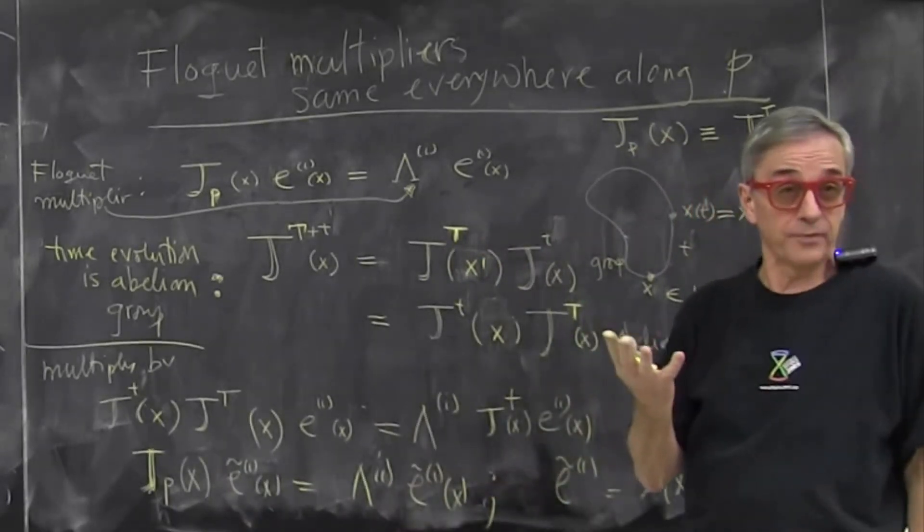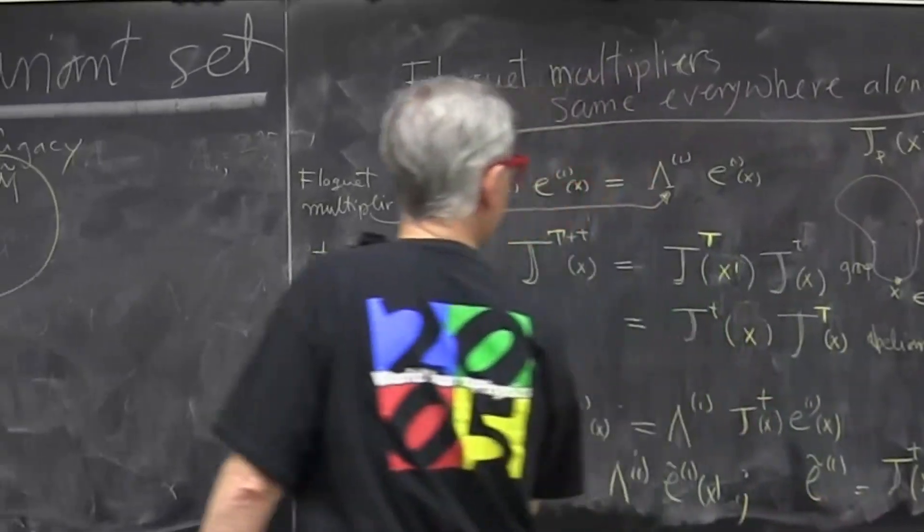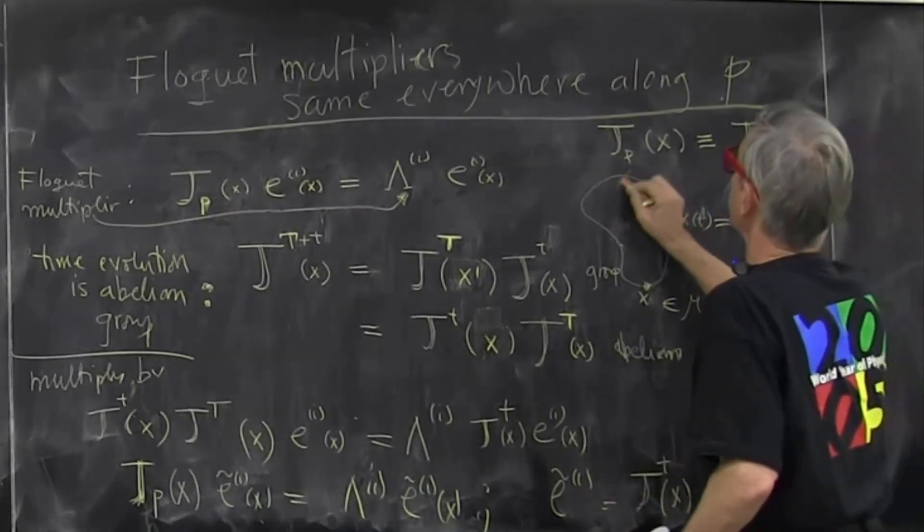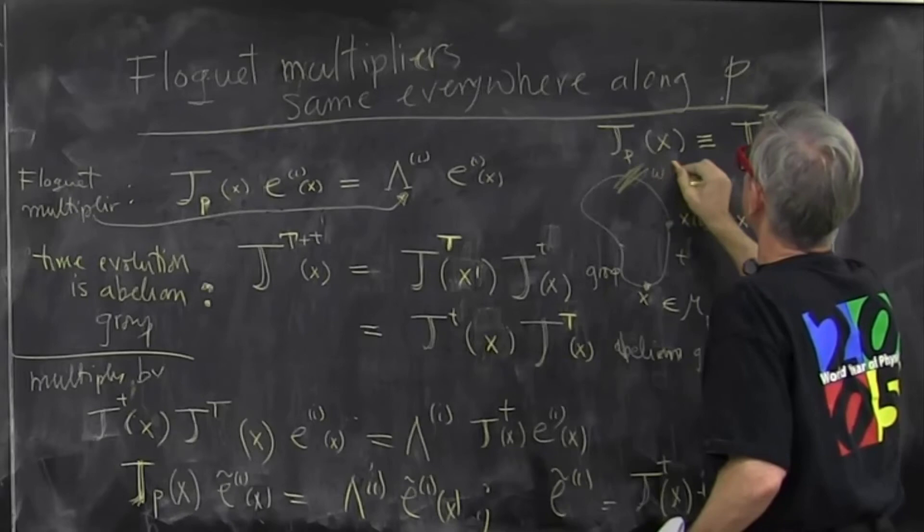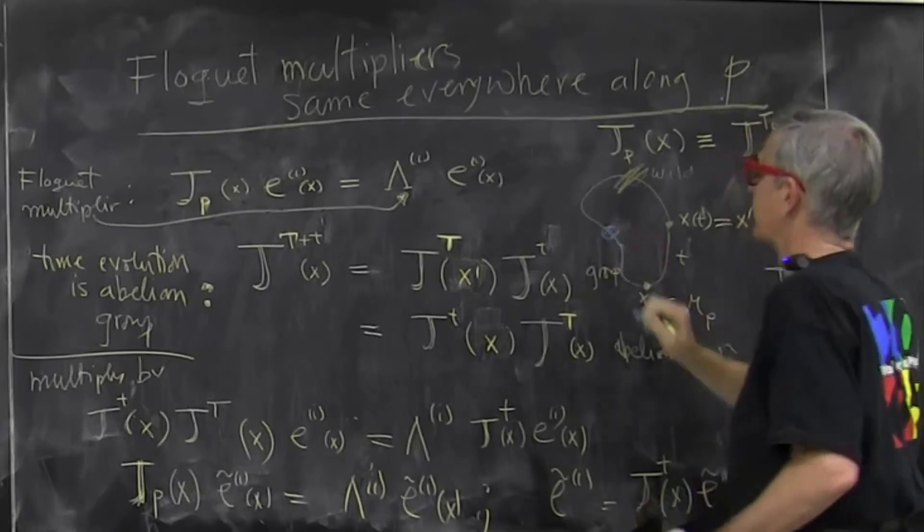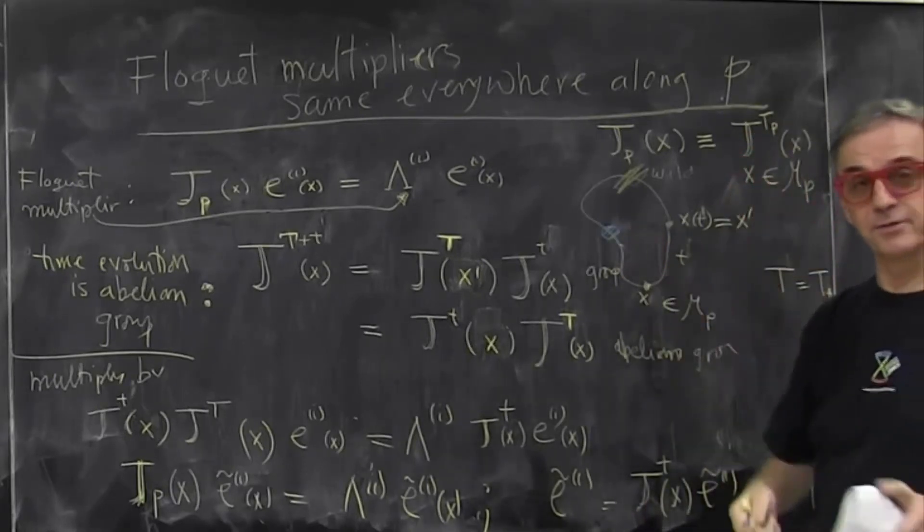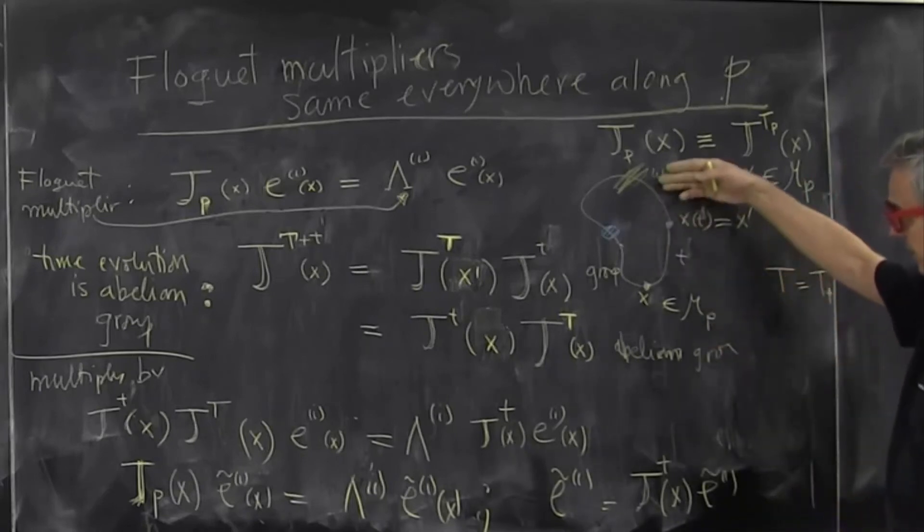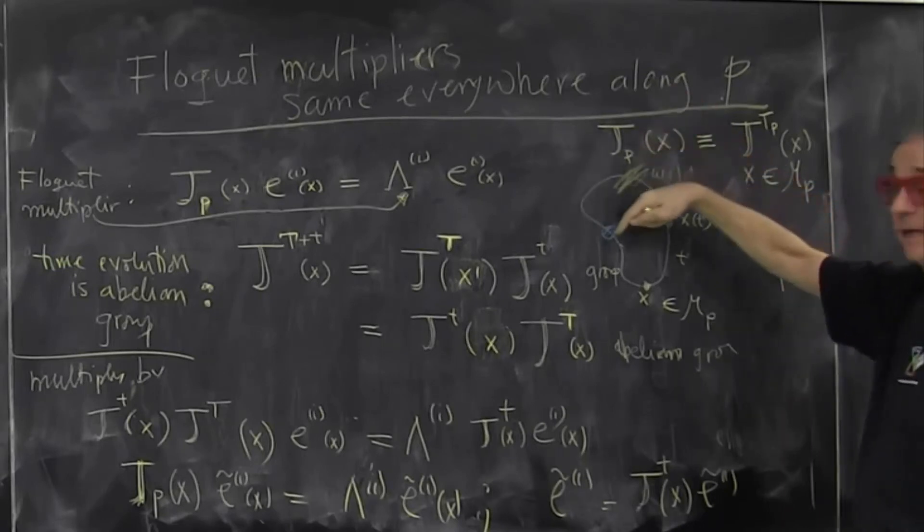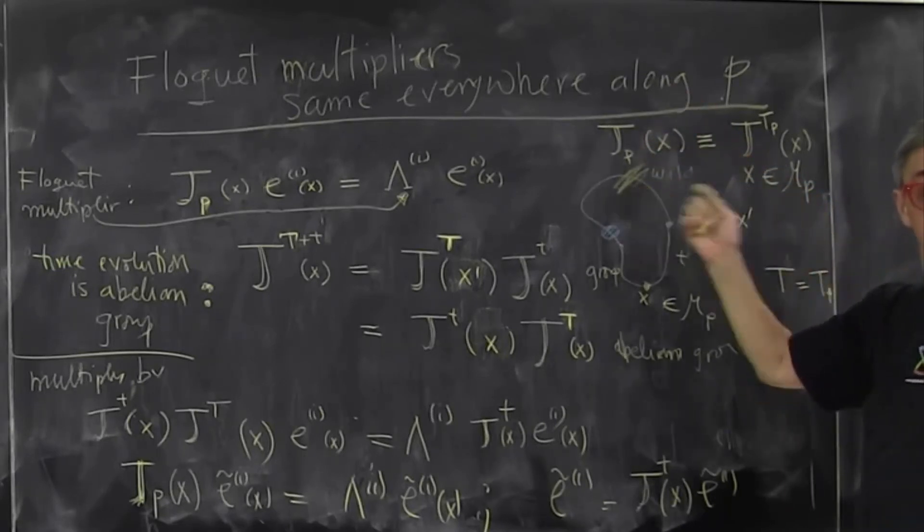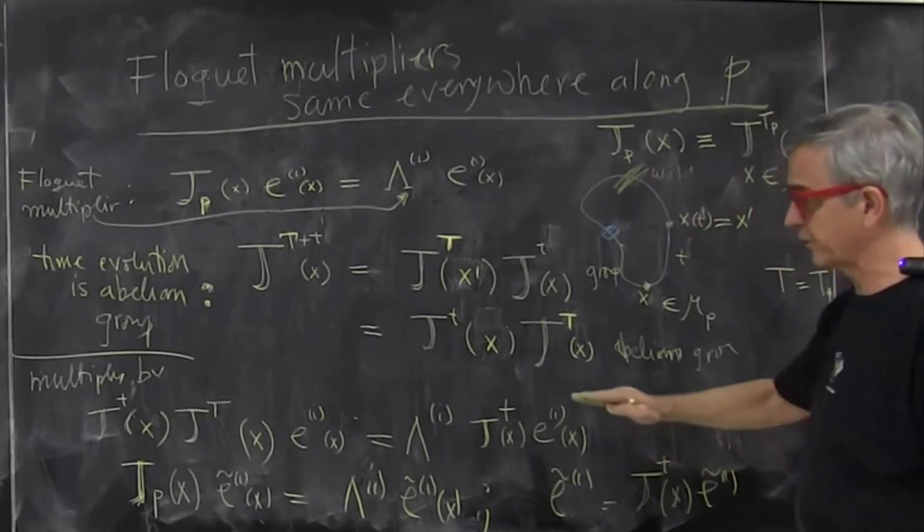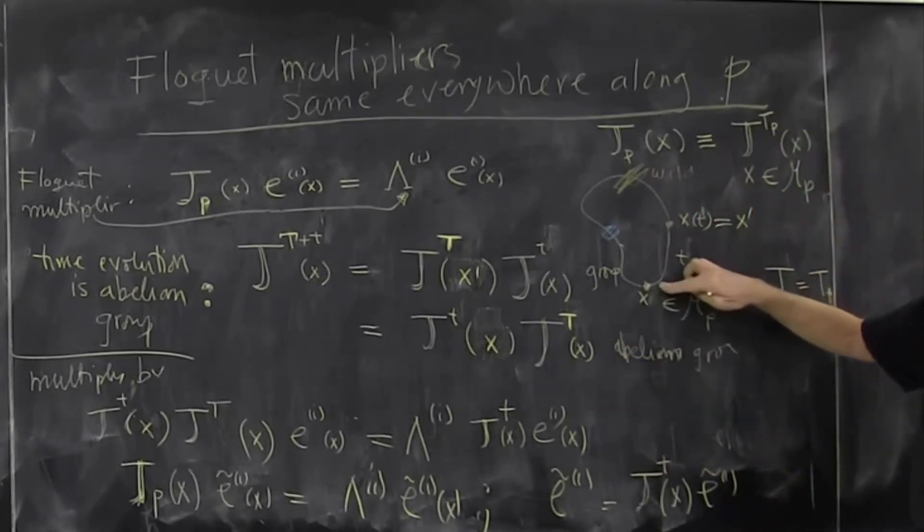And that's not really obvious because when you go around the periodic orbit, there could be lots of stretching here. It could be really wild around here. And maybe it could be very boring down here. As it often happens in time in human relationships and other things. So a priori it's not obvious that computing deformation here and deformation in a quiescent period will give you the same ratio. So that's a very comforting, nice result.